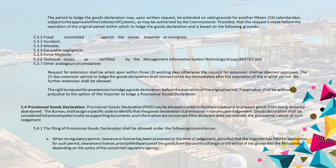5.4 Provisional Goods Declaration. Provisional Goods Declaration (PGD) may be allowed in order to facilitate trade and to prevent goods from being declared abandoned. The Bureau shall assign a specific code to identify that the Goods Declaration is provisional in nature upon lodgement. Goods Declaration shall be considered full and complete insofar as supporting documents and information are concerned if the declarant does not indicate the provisional nature of such lodgement.